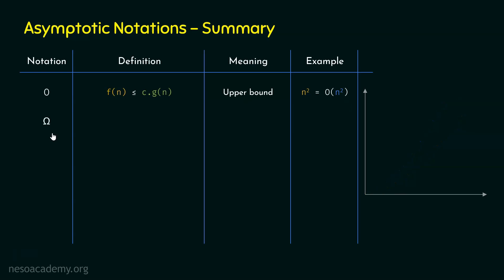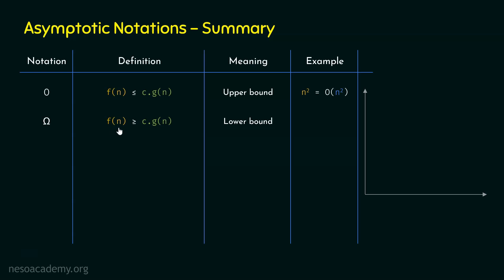Let us move to the big Omega notation. We know the definition: f(n) is big Omega of g(n) if and only if f(n) is greater than or equal to c times g(n), for some c greater than 0 and for all n greater than or equal to n0. The inequality is different here — in place of less than or equal to, we have greater than or equal to. We call g(n) the lower bound of f(n), because the growth rate of g(n) is smaller than the growth rate of f(n). Sometimes we call g(n) the tight lower bound of f(n), since there are many lower bounds and we always select the closest one.